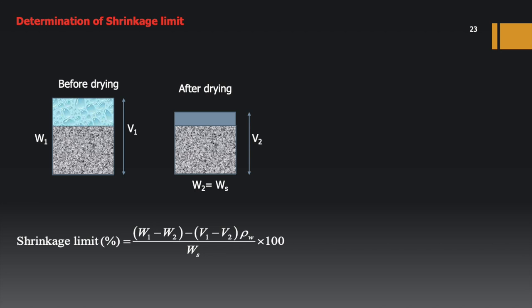Montmorillonite has a shrinkage limit of 10–15% (lower, due to parallel particle arrangement and less void space), while kaolinite has 20–30% (higher, due to random/flocculated structure with more void space retaining water). In the laboratory, the shrinkage limit is determined by measuring volume and weight of a fully saturated sample before and after oven drying for 24 hours. Using the weights W1 and Ws and volumes V1 and V2, the shrinkage limit is calculated from the standard formula.